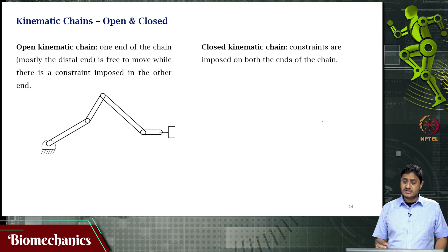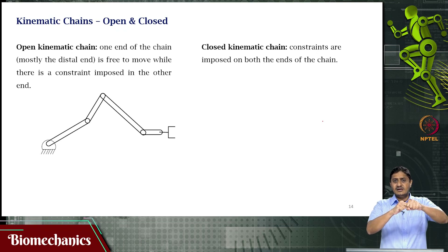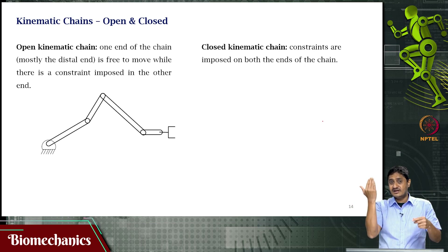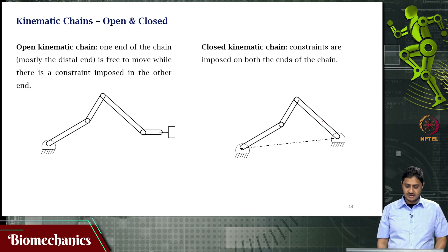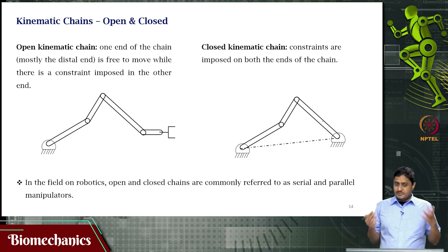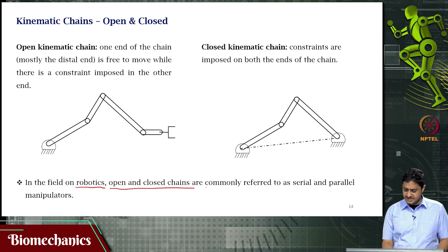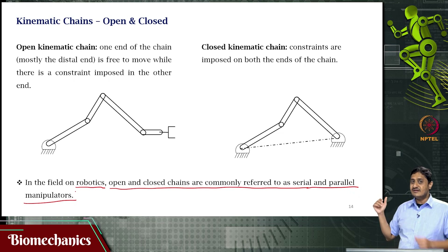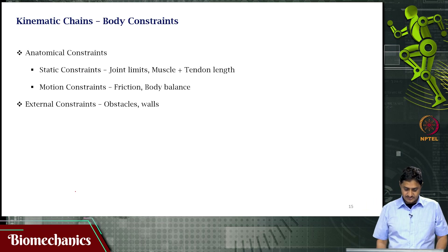In a closed kinematic chain, constraints are applied on both the distal and proximal ends. For example, if the hand is attached to the other hand and cannot be removed from it, there is a constraint on the distal end as well. Constraints are imposed on both ends of the chain. In robotics — a sister discipline — open and closed chains are frequently referred to as serial and parallel manipulators respectively.